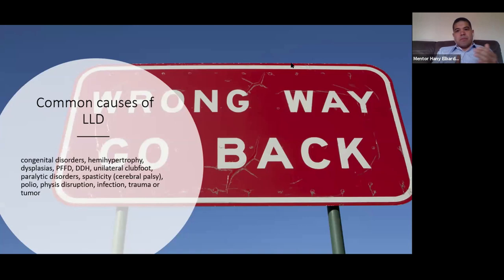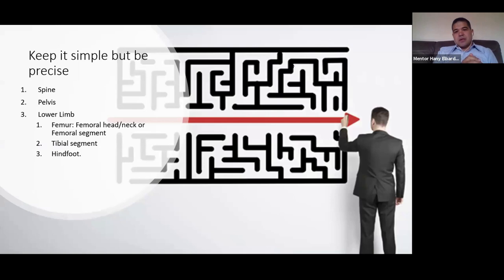The examiner may ask you what the reason is for the discrepancy. Many books list congenital disorders, hemihypertrophy, and so on — these are all true but that is the wrong way to answer. Keep it simple but precise: leg length discrepancy may be from the spine, the pelvis, or the lower limb. Within the lower limb it may be from the femur, the tibia, the hindfoot — don't forget the hindfoot.